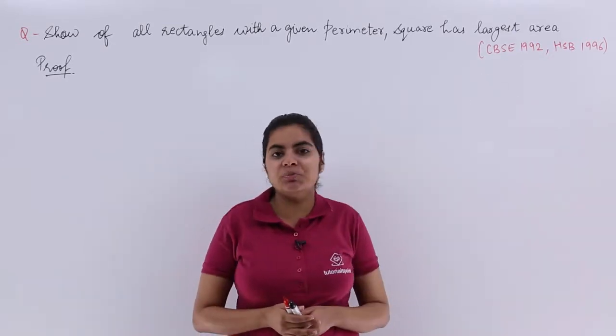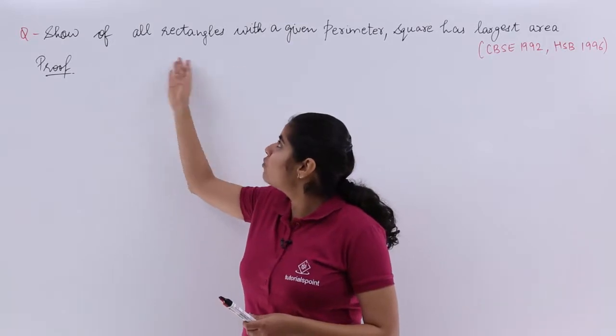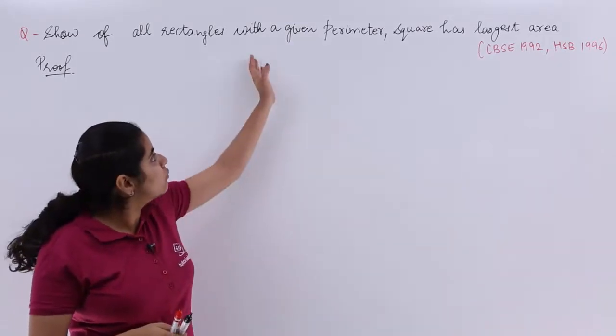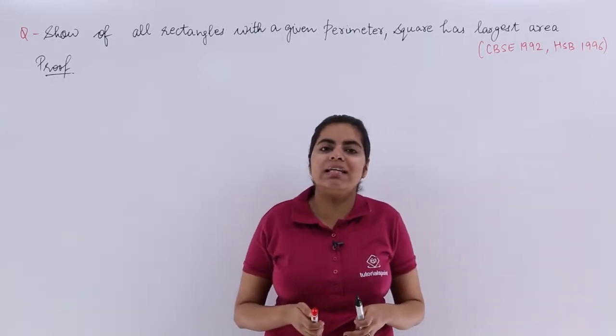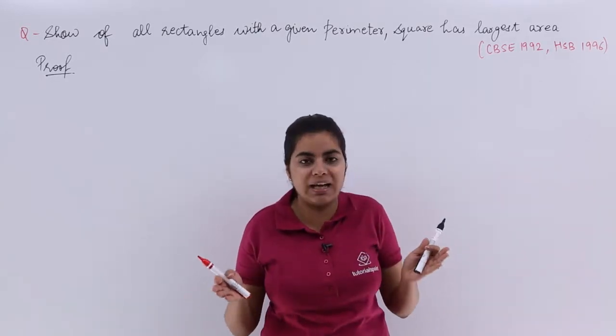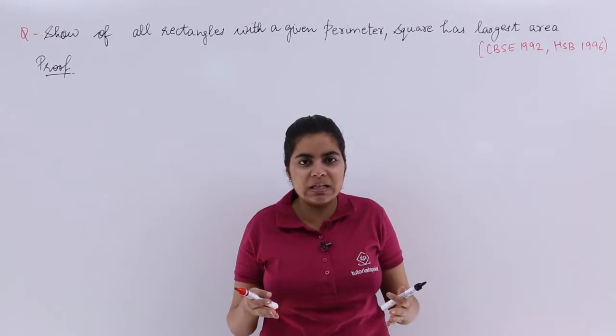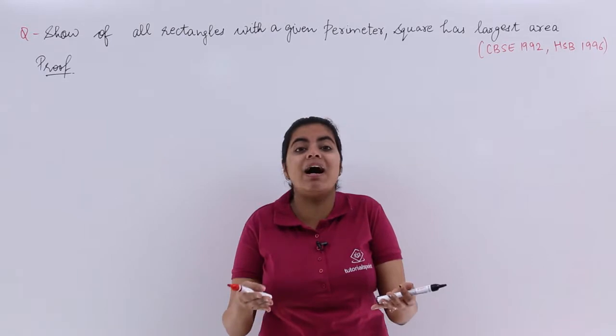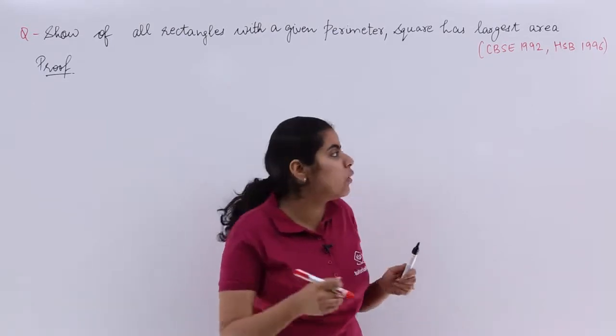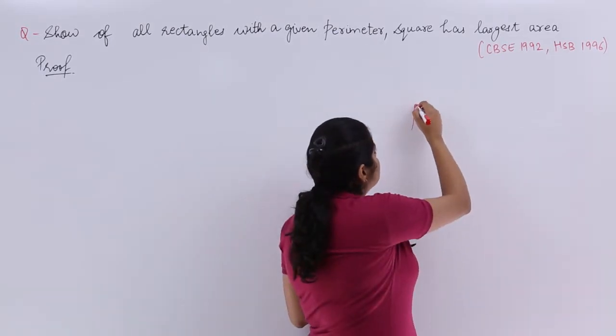The question is a previous year examination problem. It says show that of all rectangles with a given perimeter, the square has the largest area. That means if you have been given many types of rectangles with some given perimeter, it should be noted that the square has the largest area. The square would be having the maximum area.